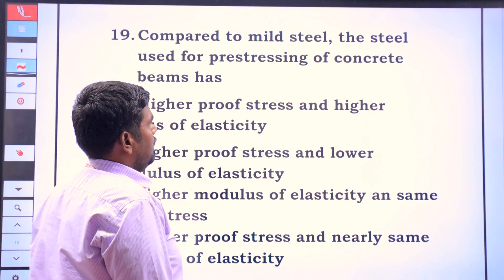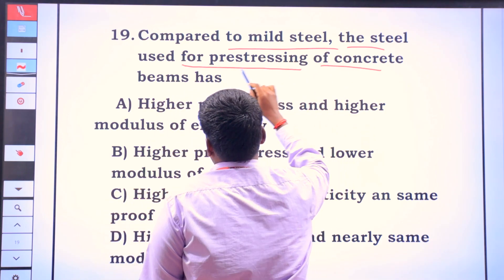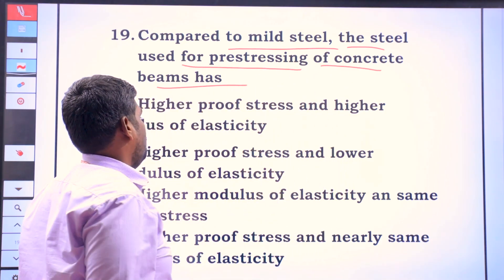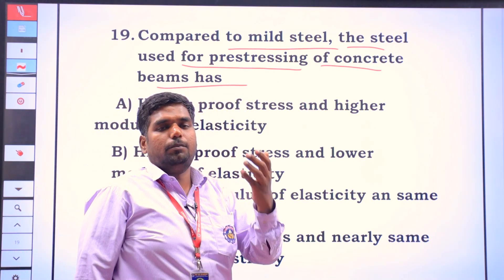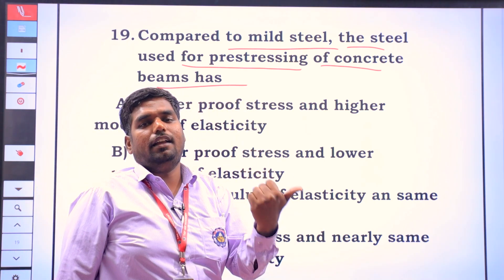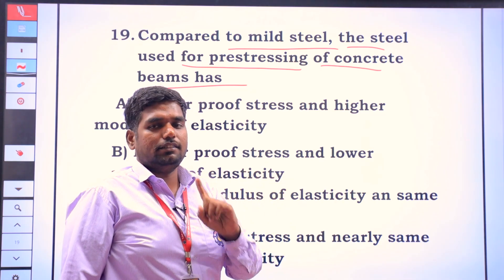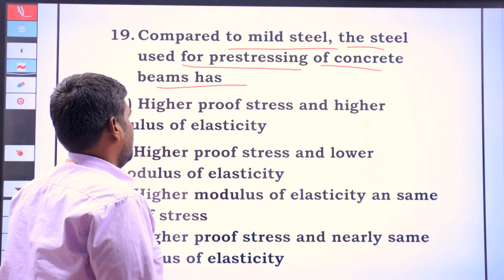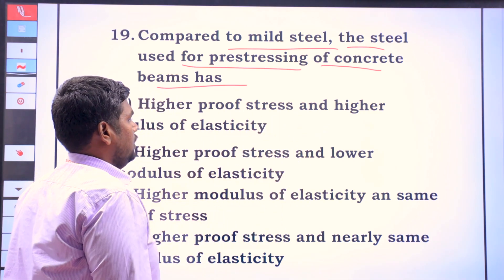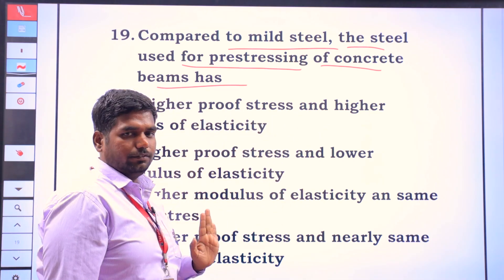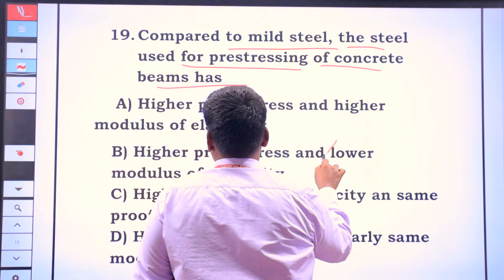Compared to mild steel, the steel used for pre-stressing of concrete beams has high tensile properties. Everyone knows the answer. The steel used for pre-stressing has higher proof stress and lower modulus of elasticity compared to mild steel.